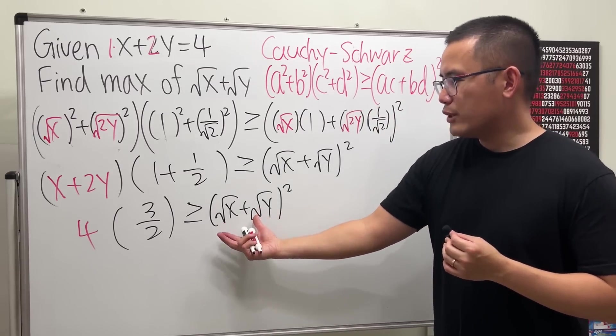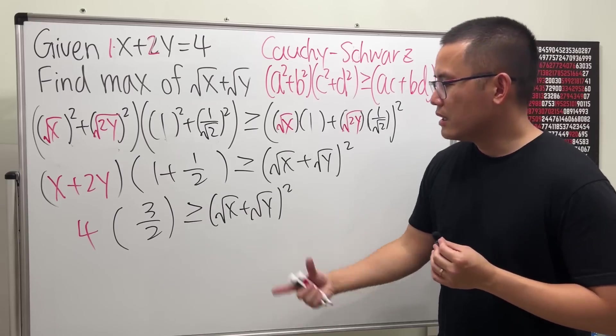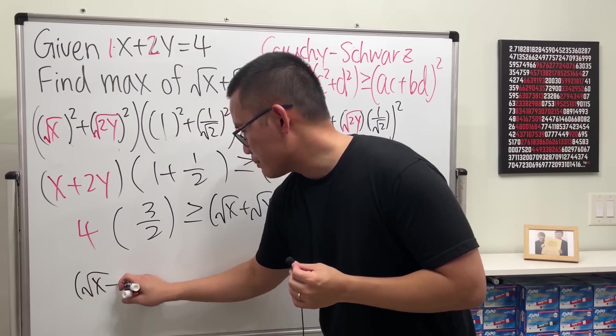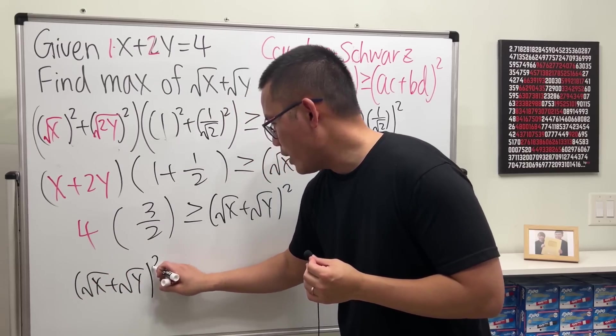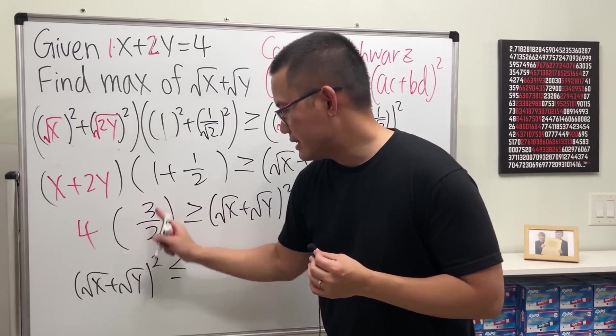And I usually like to have the variable part on the left-hand side of my inequality. So, let me write that down as square root of x plus square root of y squared. It has to be less than or equal to 6.